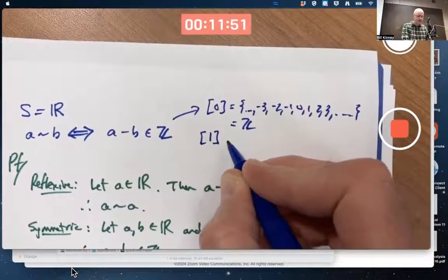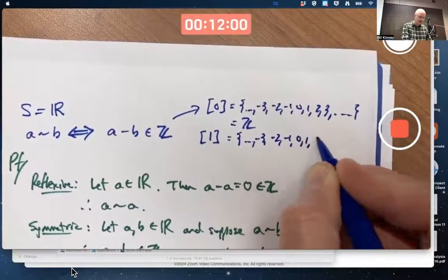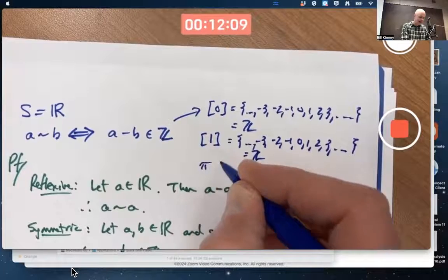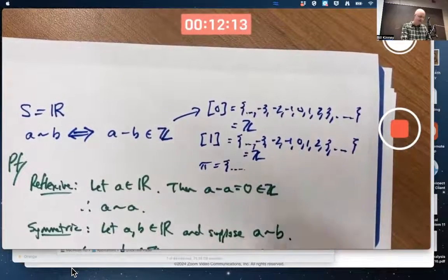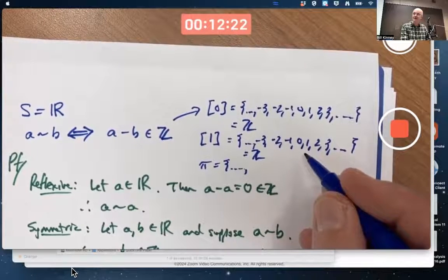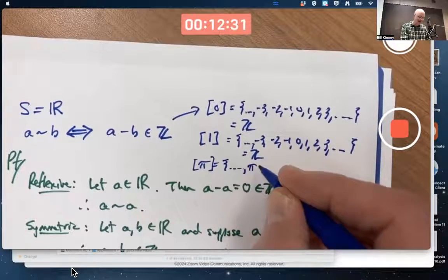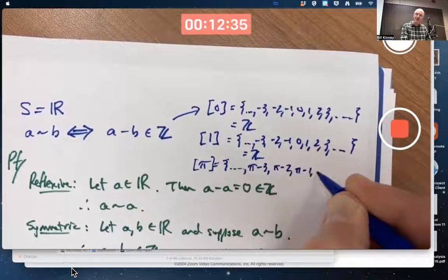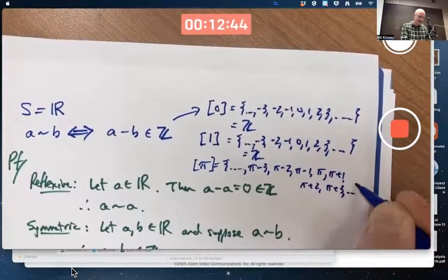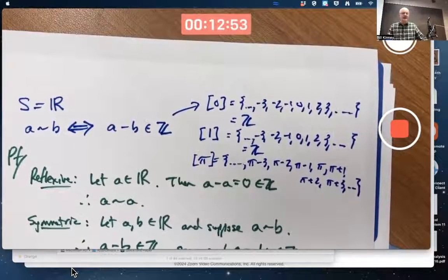The equivalence class containing 1, for example, in this case is actually the same thing — the integers, also Z. But the equivalence class containing, for example, pi is very different. It's all real numbers whose difference with pi is an integer. There's no overlap with the integers — there are going to be no integers in this equivalence class containing pi. What numbers will be in it? Well, pi minus 3, pi minus 2, pi minus 1, pi itself — pi minus pi is 0 which is an integer — pi plus 1, pi plus 2, pi plus 3, etc. None of those is an integer, and none of them is even a rational number. They're all irrational numbers.